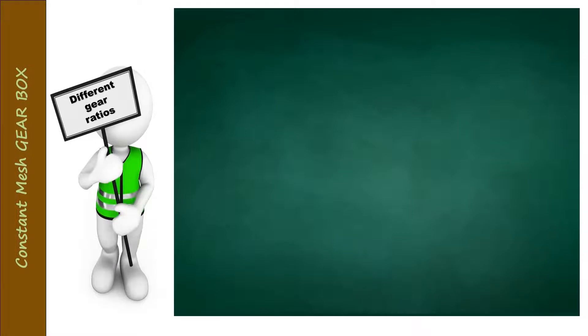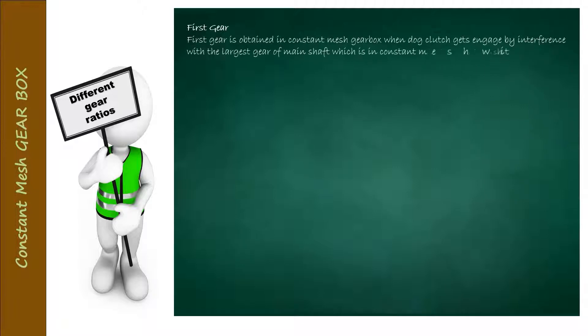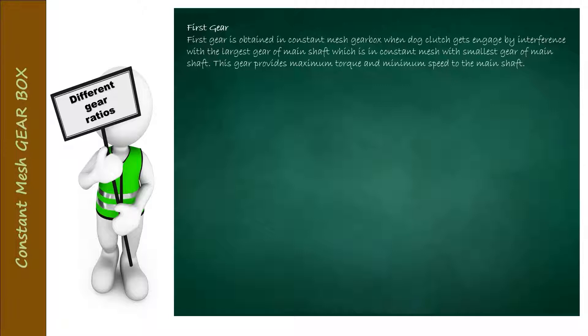Different gear ratios in the constant mesh gearbox: first gear is obtained when the dog clutch gets engaged by interference with the largest gear of the main shaft. This gear provides maximum torque and minimum speed to the main shaft. When the dog clutch engages the largest gear on the main shaft, the meshing gear on the lay shaft is smaller, resulting in less speed and more torque.